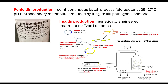Another example is insulin production. Genetically engineered treatment for type 1 diabetes — linking back to the module 5 hormonal system — type 1 diabetes is where beta cells are not producing the insulin required to maintain blood glucose levels. We can use genetically engineered bacterial microorganisms to produce the necessary protein: insulin.